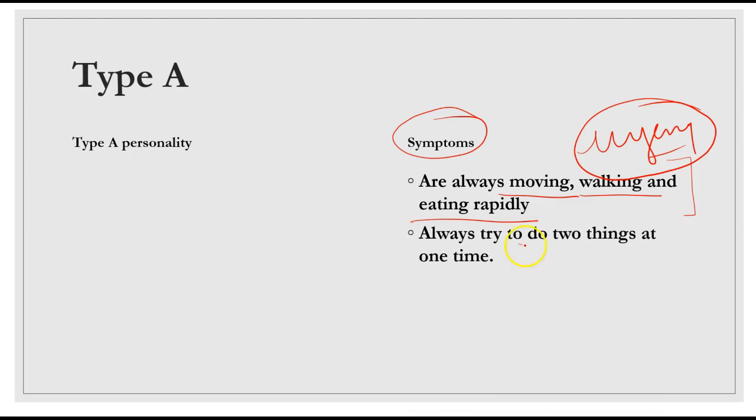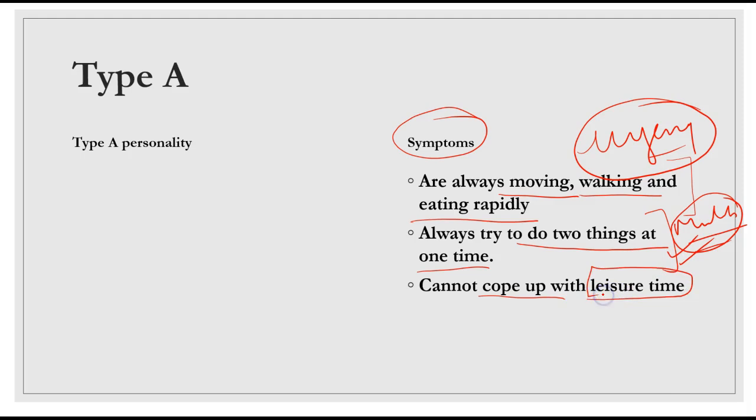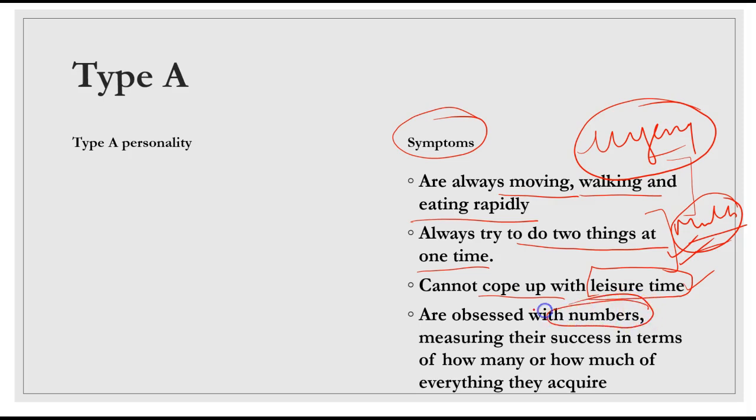They always try to do two things at one time, they keep doing multiple tasks. They cannot cope with leisure time. If they get free time, they can't cope with it because they always keep so busy that they don't have any activity planned for leisure time. They are obsessed with numbers, always measuring their success in terms of how many and how much.